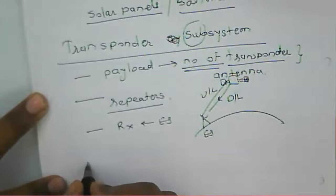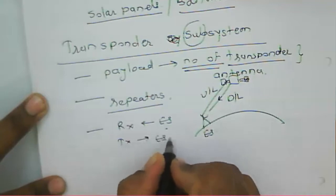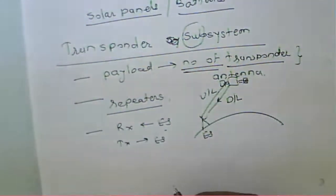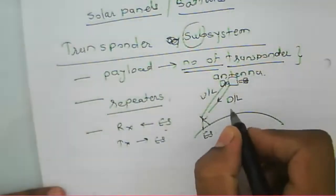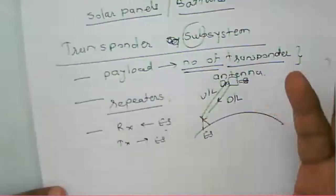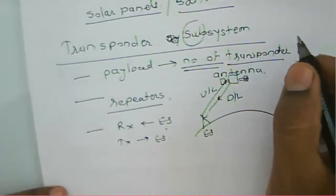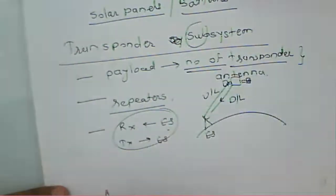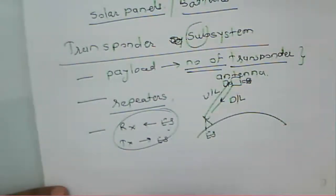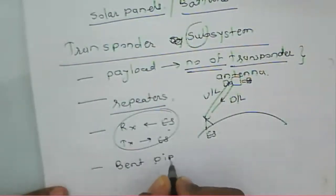The transponder receives the signal from the earth station and transmits it to the earth station. It either changes the frequency, acts as a mirror, or acts as a repeater. Because it receives and converts the frequency, this type of transponder is called a bent pipe transponder.